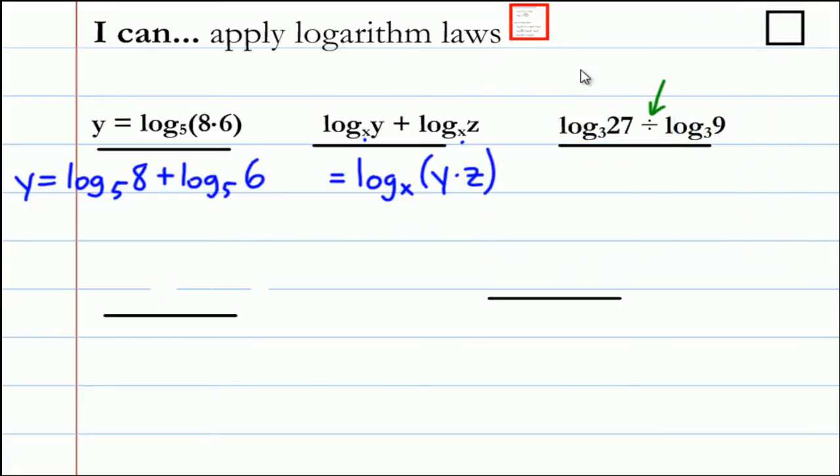But we can evaluate each term separately. We can write 27 in the same base as the log: 3 cubed is the same as 27, and 9 can be written as 3 squared. Then we write log base 3 of 3 cubed, and log base 3 of 3 squared.